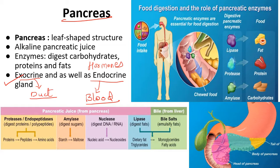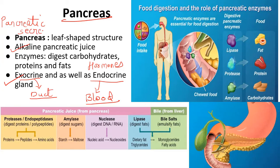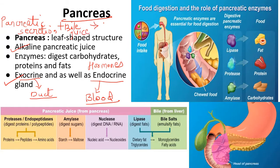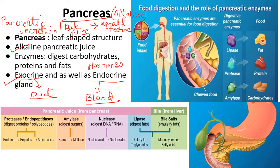The secretions of the pancreas are alkaline. Combined with bile juice, the pancreatic secretion will make the medium of the small intestine alkaline. So the small intestine's medium becomes alkaline because of these two secretions.